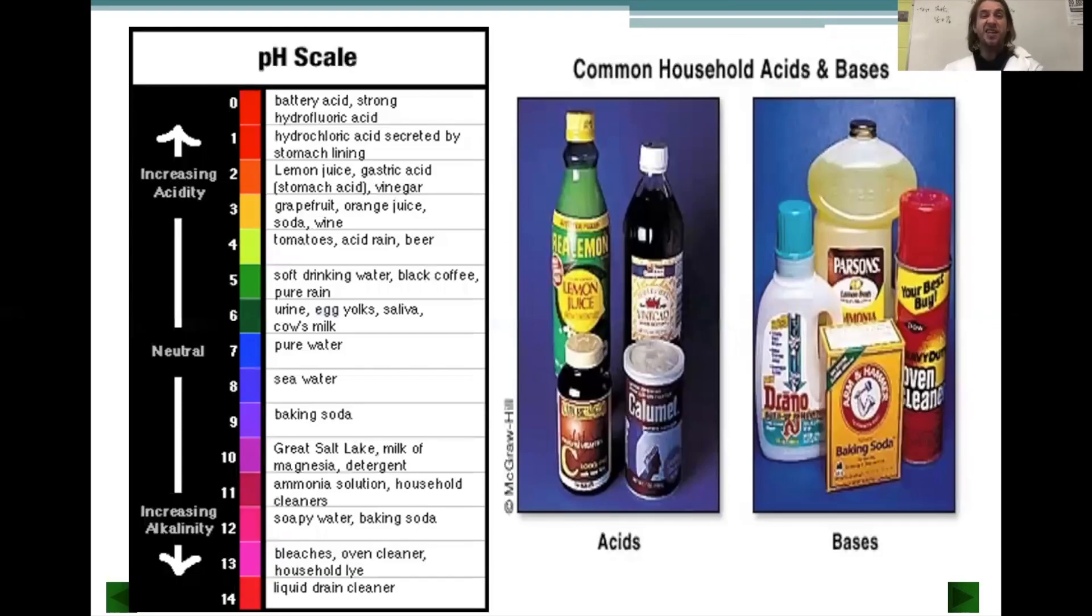Looking at acid-base reactions, we've got a scale for thinking about how reactive an acid or base is. We say that pure water has a pH of 7. You've probably heard of the pH scale. pH of 7 is neutral, neither acidic nor basic. If we are less than 7 on the pH scale, we consider that to be an acid.